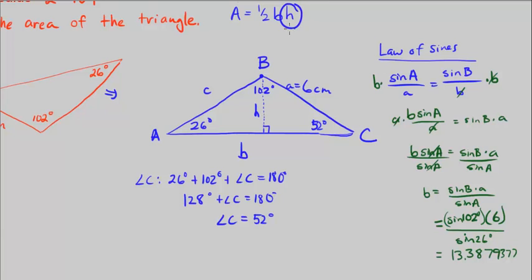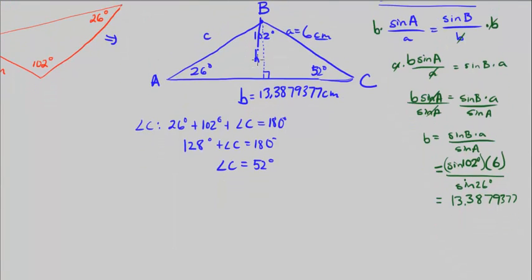So I'm trying, my goal is to find H now. I found B is equal to 13.3879377 centimeters. So all I need is the height, and I'm done, because I just plug it into my area formula, and I find the area. So if I split this triangle up here, let's go ahead and split it up. I just have the right side of the triangle, and it's now a right triangle. This is 6 centimeters as a hypotenuse. This is 52 degrees. I don't know this side because I know the whole thing, but not just this side, and I don't know this side here. That's H. I want to find H.